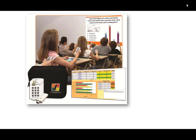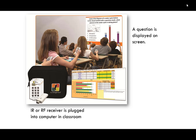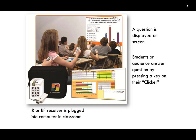What clickers enable an instructor to do is, using an IR or RF receiver plugged into a classroom computer, the instructor is able to display a question on the screen, usually using Microsoft PowerPoint. Students then use their audience response system by pressing a number or letter corresponding to an answer. Students register their clickers so responses can be recorded, and this is used as either a formative or summative assessment tool. Research shows these are very effective at engaging students and providing instructors real-time feedback about student learning.